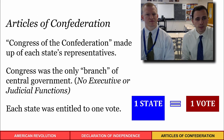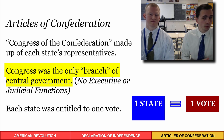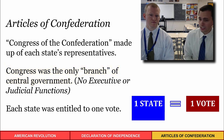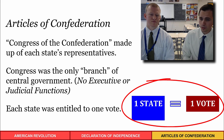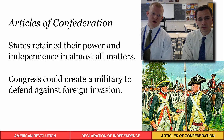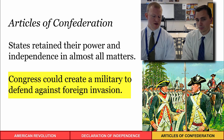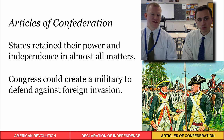The Articles of Confederation had a Congress of the Confederation with representatives from each state — but that was the only branch. There was no executive branch and no judicial branch, so no president or court system. Each state had one vote in Congress, which was problematic because larger, more influential states had the same number of votes as smaller ones. Every state retained power and independence in almost all matters. Congress could create a military to defend against foreign invasion, which was the number one priority at the time.